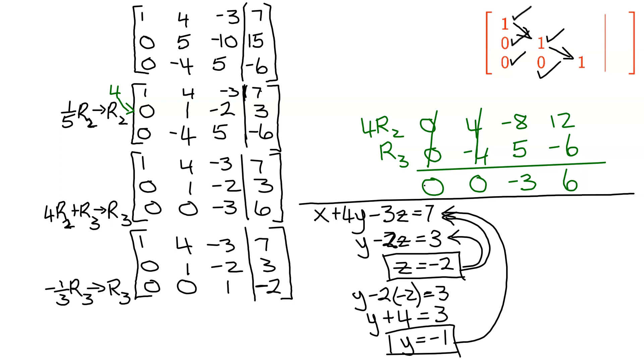I have y and now we take both of those values and put them into the very first equation. So I have x plus 4 times y, which is negative 1, minus 3 times z, which is negative 2, equals 7. So x minus 4 plus 6, negative 3 times negative 2 is positive 6, equals 7. Negative 4 added to 6 is 2, so x plus 2 equals 7. Subtract 2 from both sides, x equals 5.